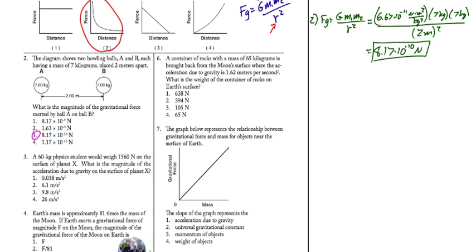Let's go on and try number 3. A 60 kilogram physics student would weigh 1560 newtons on the surface of planet X. What's the magnitude of the acceleration due to gravity on that planet? Well, to do that, I'm going to start by writing that the weight of the object, which I write as mg, is 1560 newtons. Therefore, g must be 1560 newtons over mass, which is 60 kilograms, or about 26 meters per second squared. Answer 4.